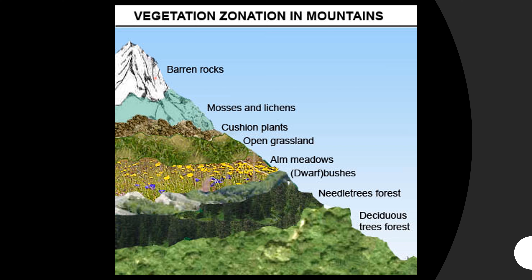Beyond where the mosses and lichens end, the area comes under barren rocks — this is where the vegetative zone of the mountain ends and the snow line starts. All these areas remain covered with snow and consist of barren rocks, deprived of any kind of vegetation.